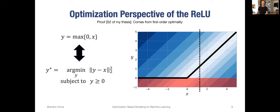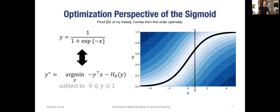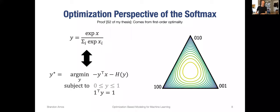The sigmoid is also a convex optimization layer — it's also doing a projection onto the zero-one box, where an H term is a bidirectional entropy term. You can look at the contour surface of this optimization problem and convince yourself the solution is the sigmoid; if you look at the first-order optimality conditions, you also get the sigmoid. Lastly, you can also interpret the softmax as a convex optimization layer. It's very similar to the sigmoid, except you're projecting onto the simplex, with an entropy penalty over the closed surface. If you take the first-order optimality conditions of this, you get the normal closed-form solution to the softmax.